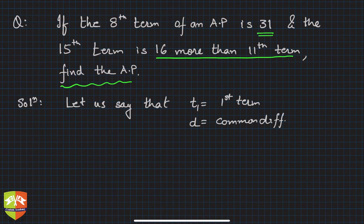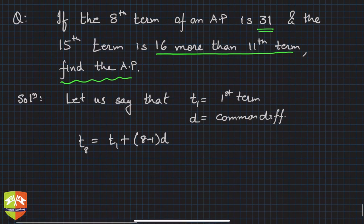From the first line, 8th term of an AP is 31. That means t₈ is how much? t₈ is t₁ plus (8-1)d. This is what we have been doing so far, very easy. t₈ is 31, so 31 equals t₁, we don't know what t₁ is, 8 minus 1 is 7.